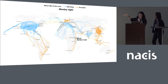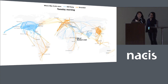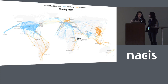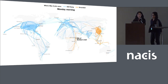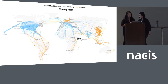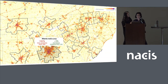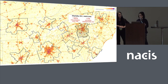We updated the map several times as the story developed over several days. In the end we used all of those different data files to create an animation showing how the MAX 8 went from flying more than 8,000 flights around the world to having no flights in the air.